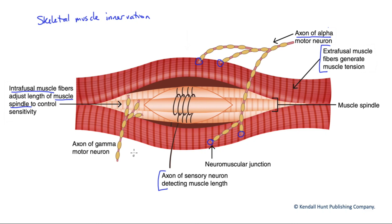Now, the intrafusal fibers are also innervated by gamma motor neurons — in other words, we can initiate their contraction as well. Their contraction is not to contribute to the overall muscular strength or tension. Their contraction is stimulated to adjust the sensitivity of this muscle spindle apparatus. For instance, when a muscle contracts, the muscle spindle could become slack, in which case changes in muscle length would be less detectable. So we need to keep some tension on these intrafusal fibers through the gamma motor neuron actions to make sure our muscle spindles are functioning properly.